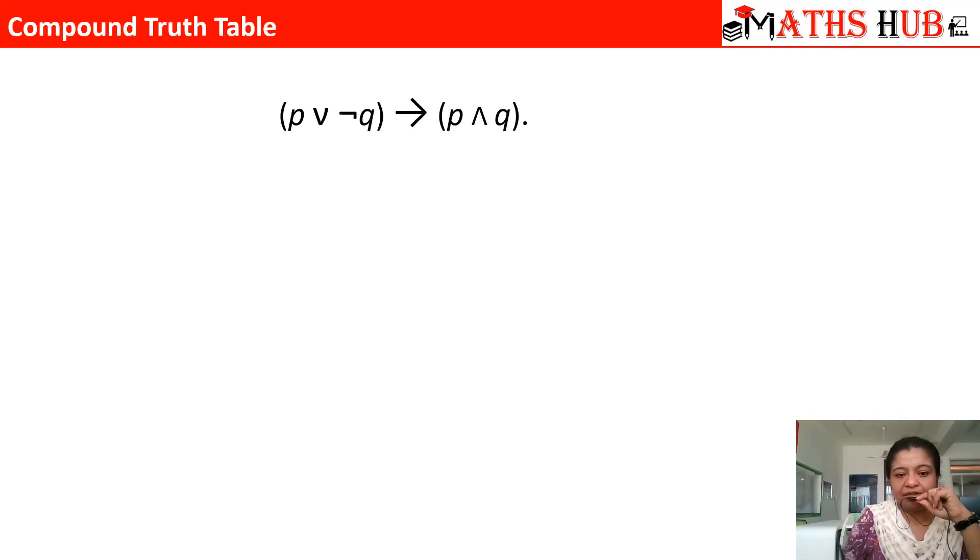The next example we have: p or negation q implies p and q. According to the statement, what are the input variables? The input variables are p and q. Then we have negation q. Then we have p or negation q. Then we have p and q. I am writing all the things according to the statement.